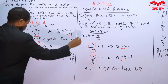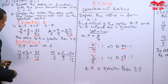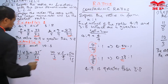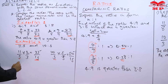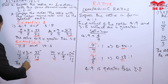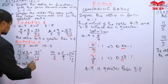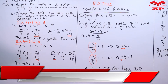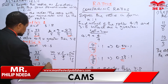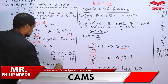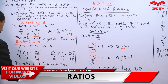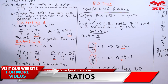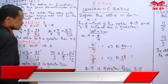Step two — compare the numerators. The numerator thirty-three is less than the numerator fifty. So the ratio ten to three is greater than the ratio eleven to five. This confirms the alternative method gives the same result.